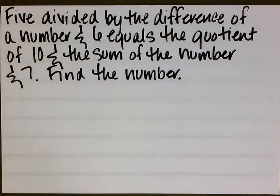5 divided by the difference of a number and 6 equals the quotient of 10 and the sum of the number and 7. Find the number.